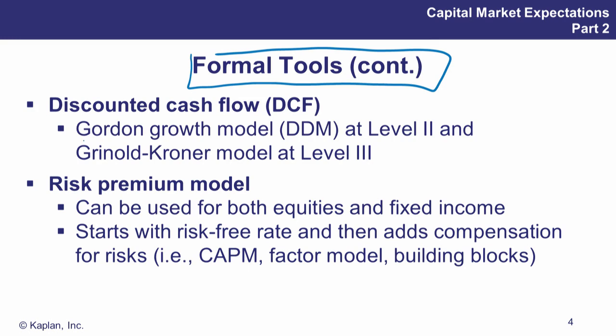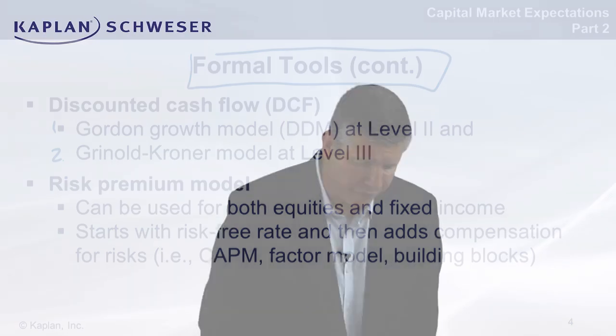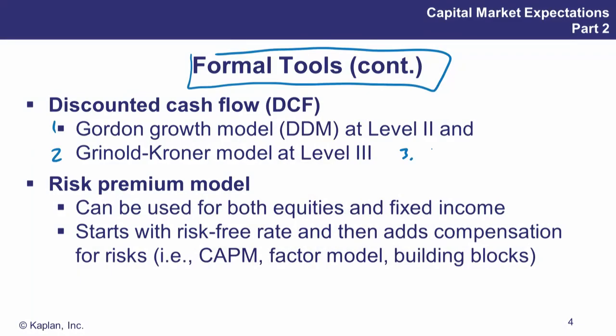We have some formal tools and models coming in. Two models to start us off: the Gordon's Growth model from Level 2, and then the new one at Level 3, our Grinold and Croner model. We also have the Singer and Terhaar model coming in as well. Let's have a look at these.